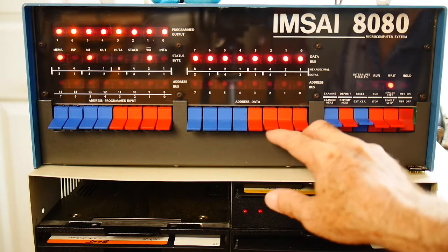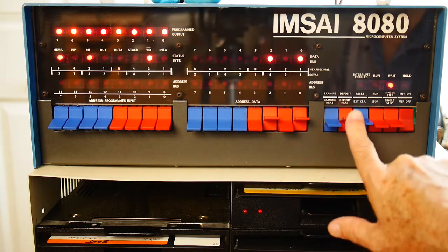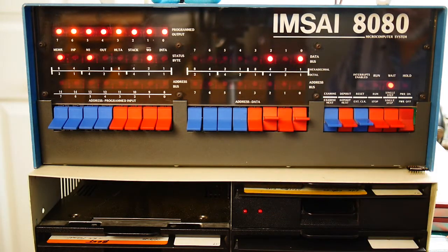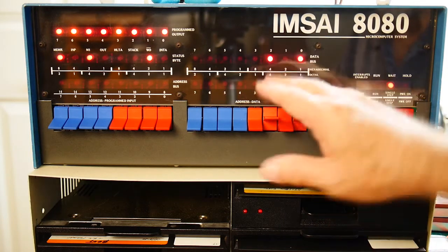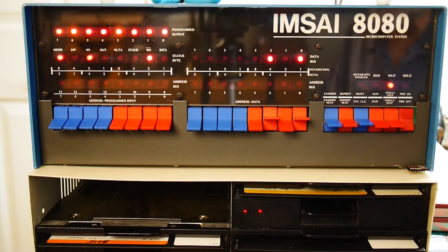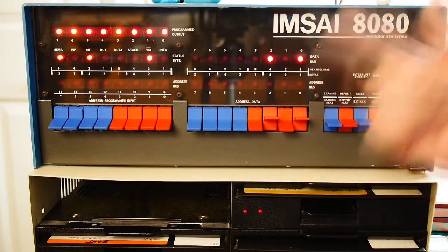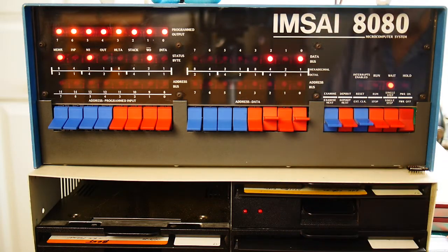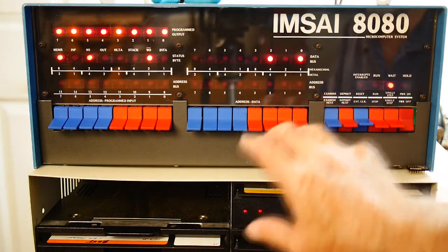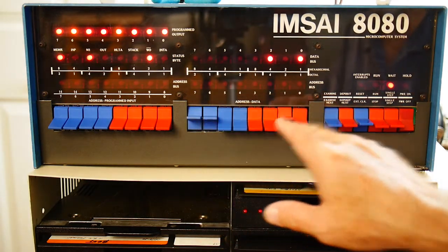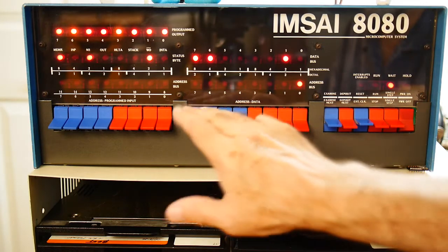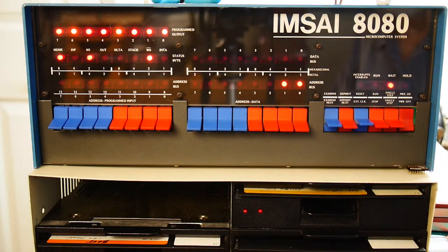So we'll go to address 0. 05 is decrement B. And then the decrement B instruction affects the flags. So when it reaches 0, it's going to count down. And when it reaches 0, it will set the zero flag. So we're going to do a jump not zero, which is a C2. We're going to go to 0, 0. So there's our delay routine.